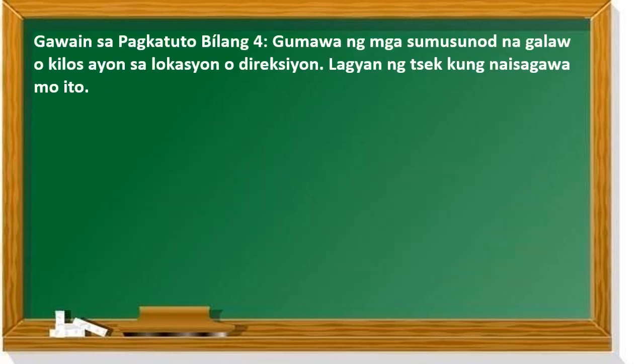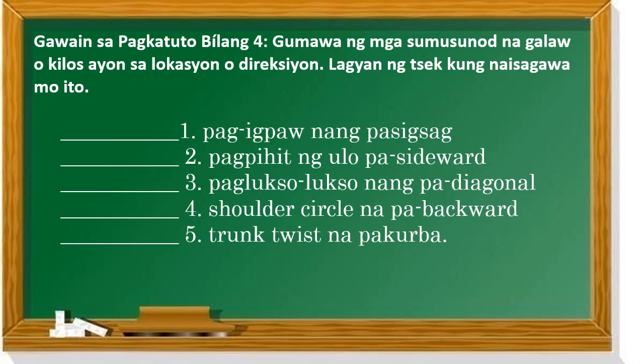Gawain bilang pangapat: gumawa ng mga sumusunod na galaw o kilos ayon sa lokasyon o direksyon. Lagyan ng check kung naisagawa mo ito. Halimbawa: pag-igpao ng pasigsag, pagpihit ng ulo ng sideward o patagilid, paglukso-lukso ng padyagonal o pa-slant, shoulder circle na pa-backward, trunk twist na pa-korba. Lalagyan mo lang ng check kung nagawa mo, at kung hindi, ekis.